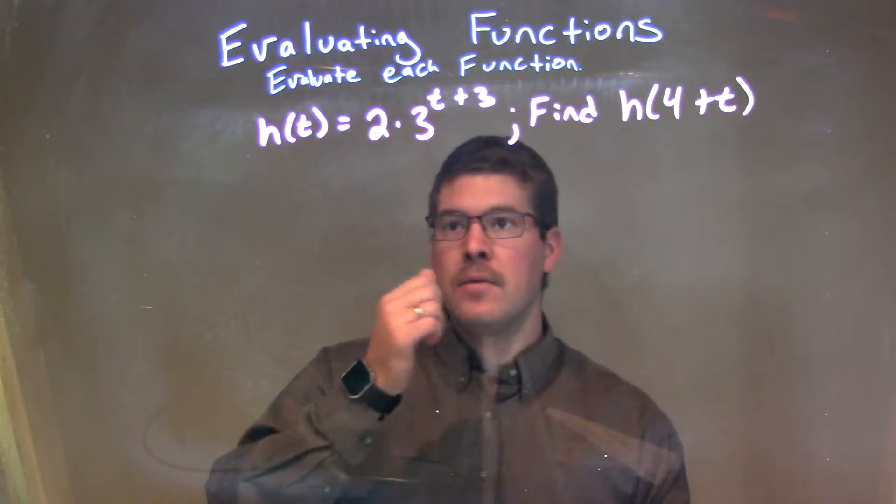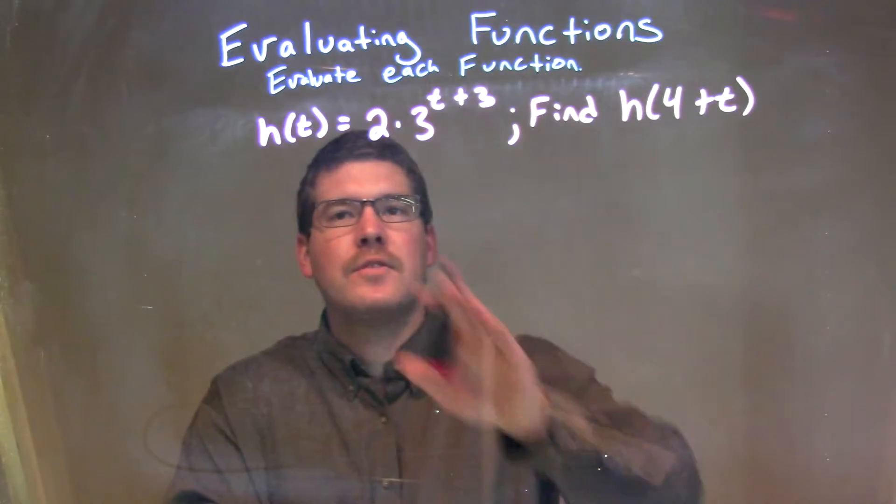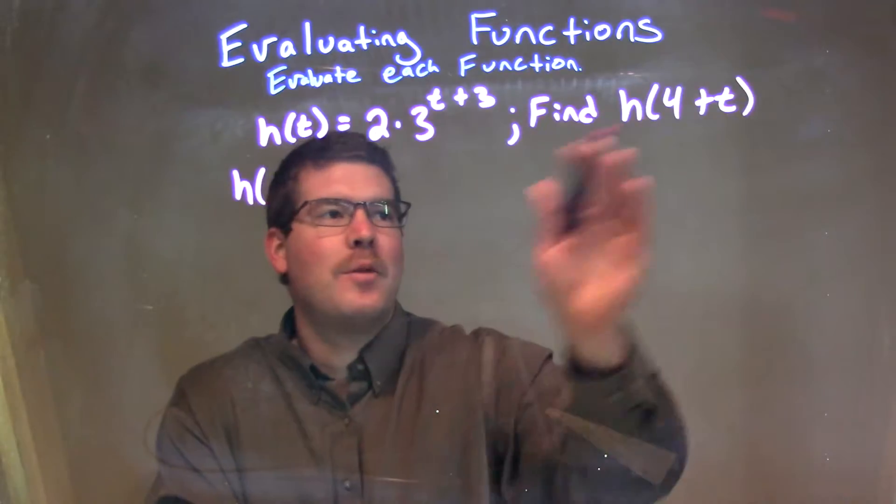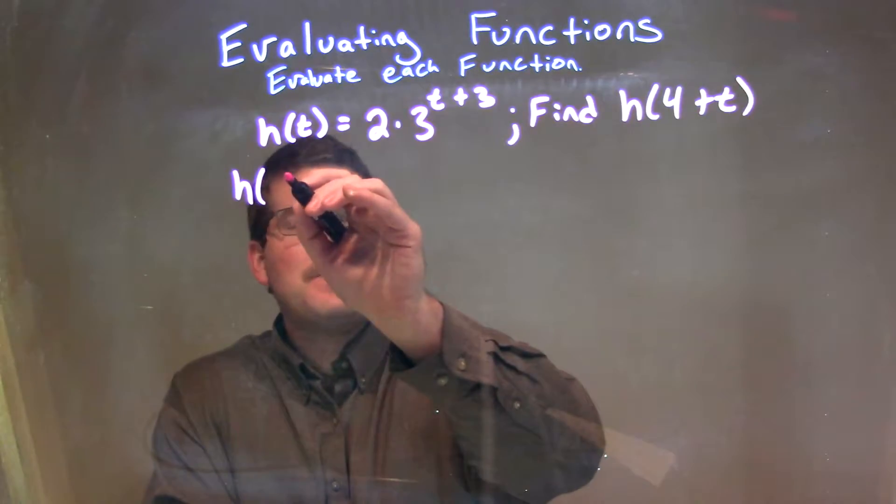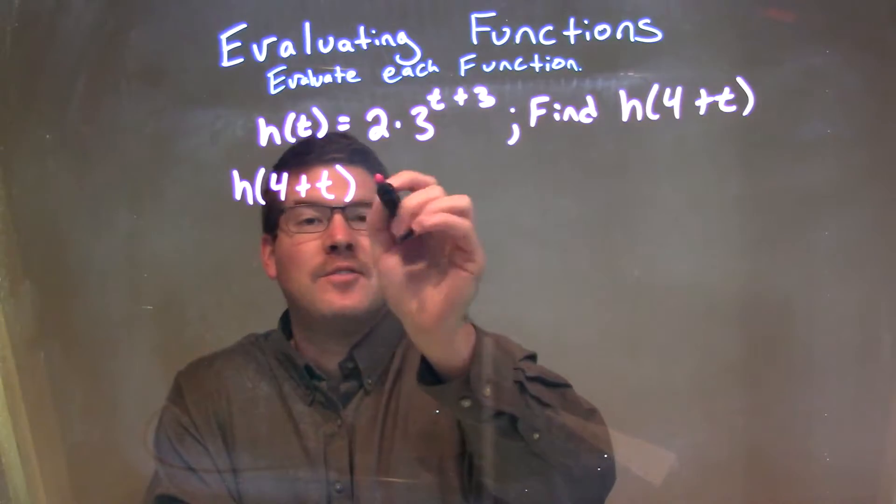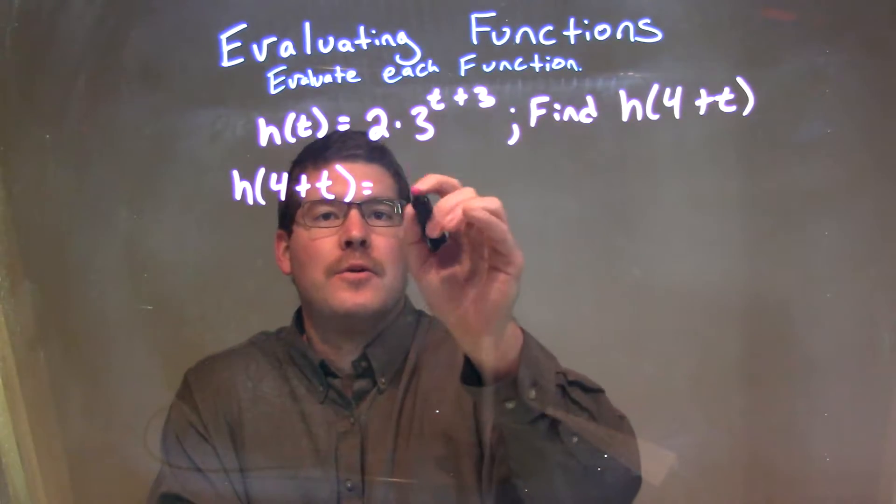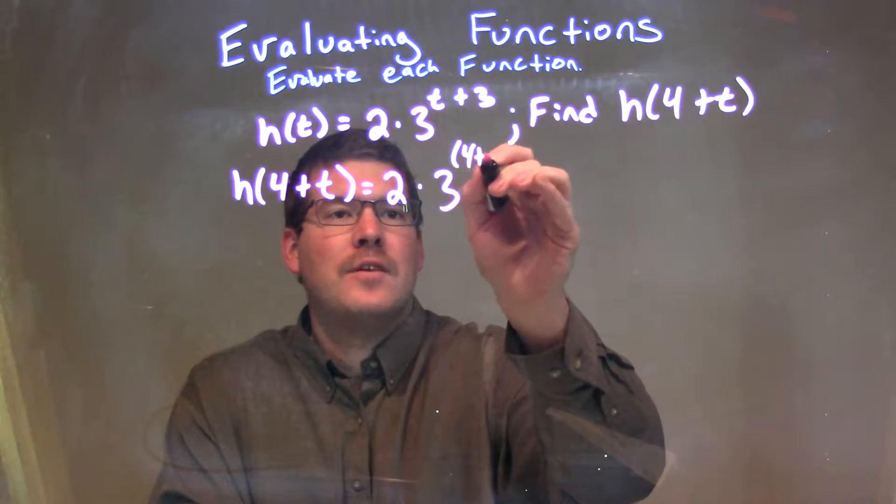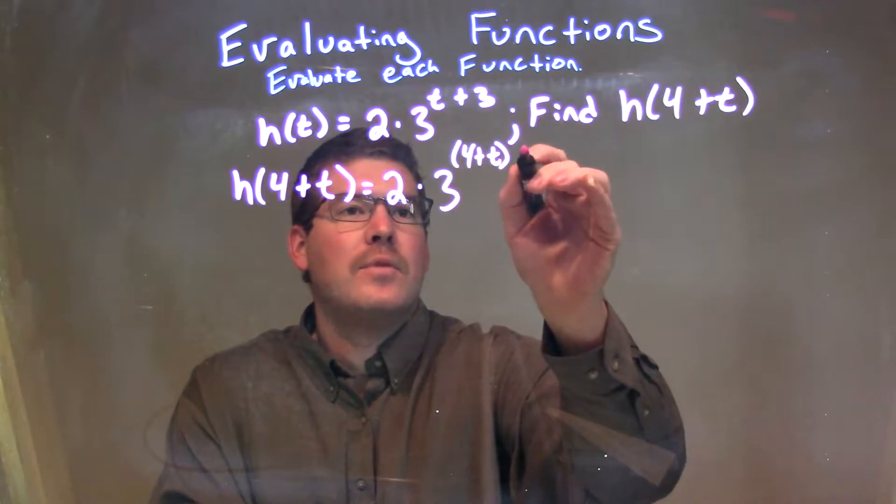Okay, so what I want to do is, every single time I see a t, I'm going to plug in a 4 plus t. So, we have h of, and be careful with the plus signs and the t, h(4 + t), and that's why t is a little curly there, is equal to 2 times 3 to the 4 plus t exponent plus 3.